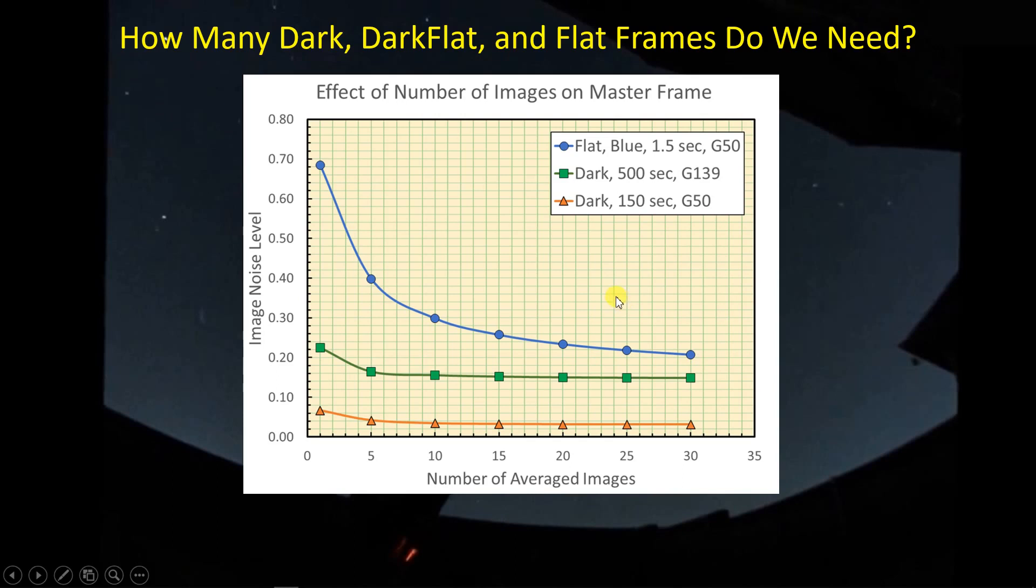But here's the thing. What we're looking for is for this curve to flatten out so that we have properly identified, properly characterized, on average, the level of noise in a flat frame, so that when we use this master flat, we will, at least on average, be properly compensating for the optical variation across the sensor.